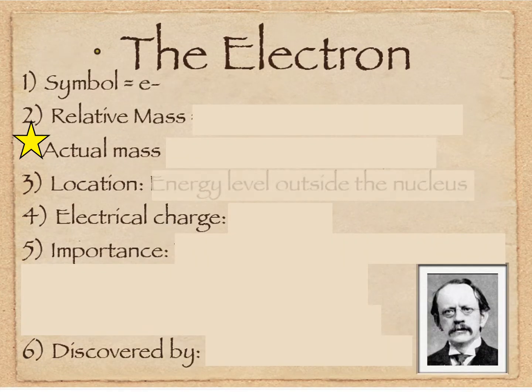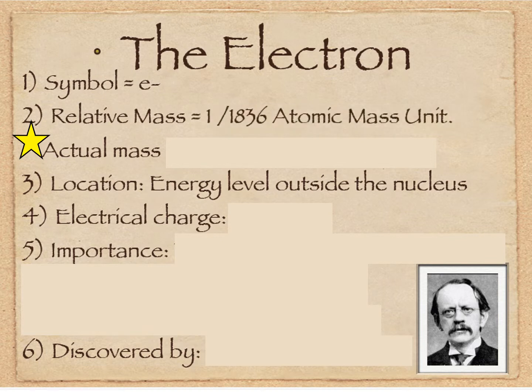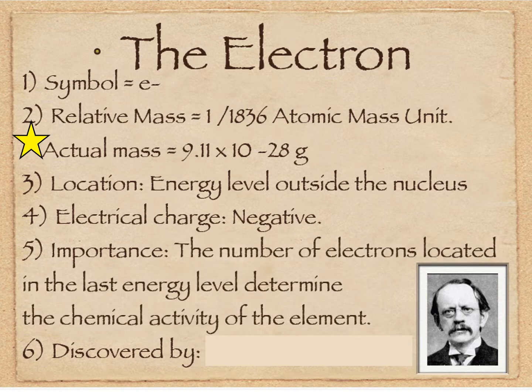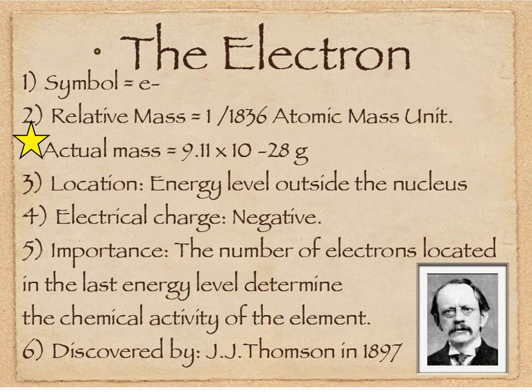The electron is E- and it's outside the nucleus, called the electron cloud. More specifically, we'll get into the electron orbitals. Its atomic mass unit is 1/1836th of a mass, so it's really, really small. You can see 9.11 times 10 to the negative 28 grams, compared to 10 to the negative 24 for the proton. It's a negative charge, and the number of electrons located in the last energy level will determine its reactivity. That's really what's important about the electron — it really affects the reactivity of the element. It was discovered by Thompson with the cathode ray tube in 1897.